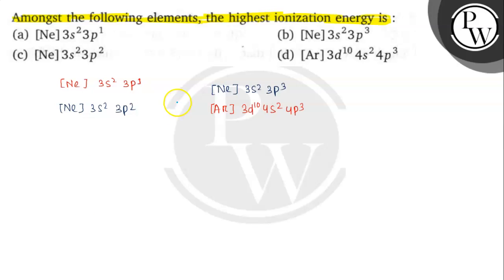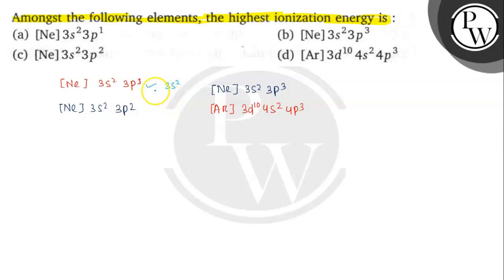Ionization energy means we have to remove one electron. When we remove one electron from [Ne] 3s² 3p¹, the outer electronic configuration becomes 3s², which is the inert gas electronic configuration — meaning it becomes stable. So this will not be the answer, because we can easily remove one electron since it becomes stable after removal.